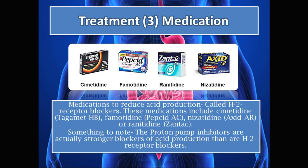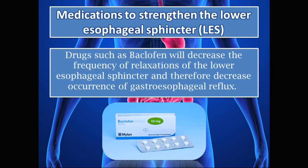We can also use medications to reduce acid production called H2 receptor blockers, or histamine-2 receptor blockers. These include cimetidine, famotidine, nizatidine, and ranitidine. It is important to note that PPIs are actually stronger blockers of acid production than H2 receptor blockers.